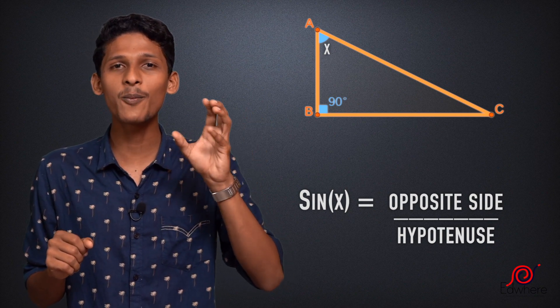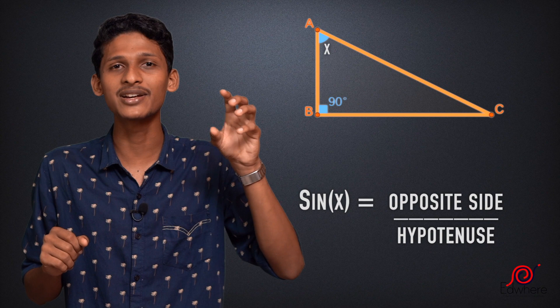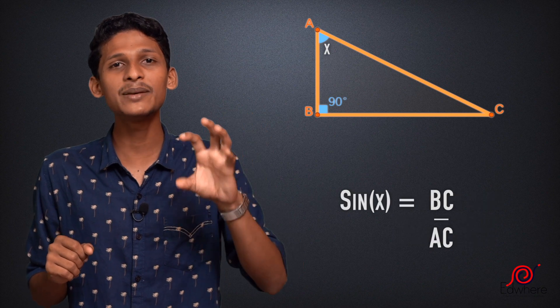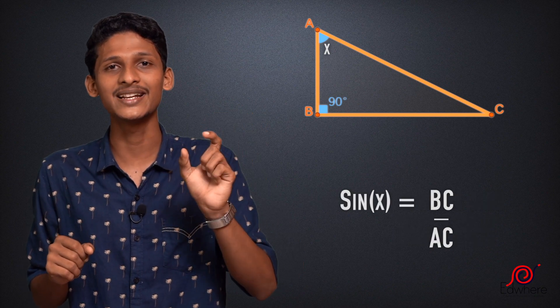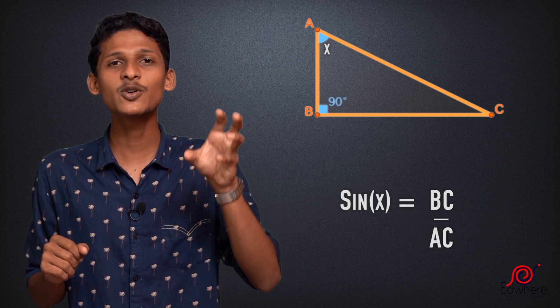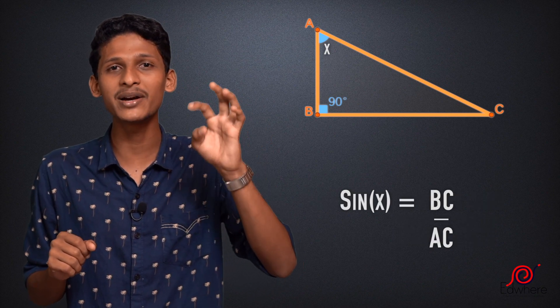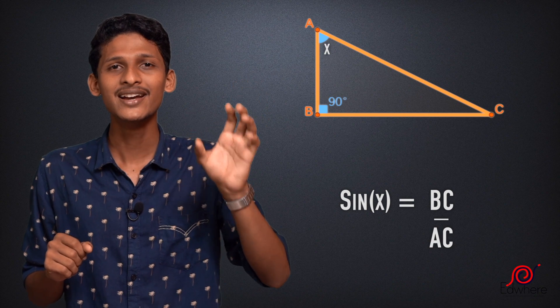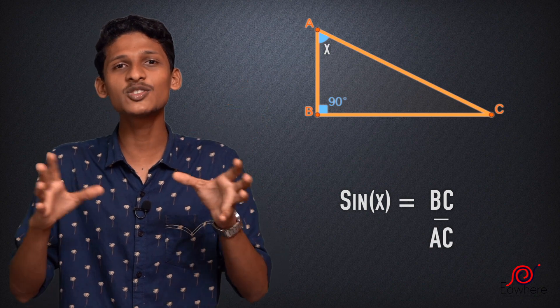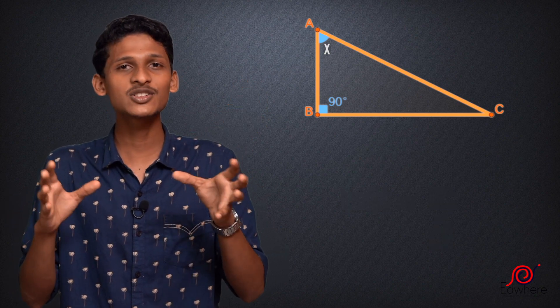So, what is opposite side by hypotenuse? It is BC by AC. What is the sin of x? Sin of x equals BC by AC. What is the cos of x?